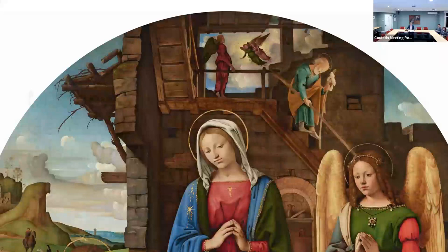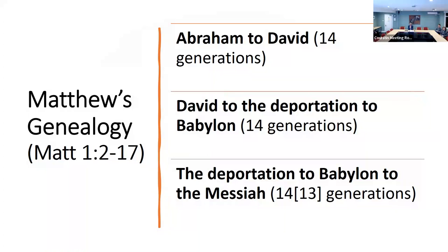I want now to take us to Matthew's genealogy and look at its shape, because as many of you know, it's a very stylized genealogy. It structures the family tree into three groups — three sets of 14 generations — except, as many of the early fathers of the church recognized, there aren't actually 14 generations in the third set. You have to count somebody twice in order to get 14 rather than 13. But the number 14 — three sets of 14 generations, 42 generations in total — is immensely significant. This threefold structure wraps around the low points and the high points of salvation history.